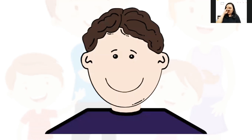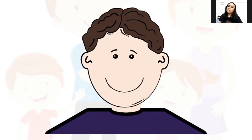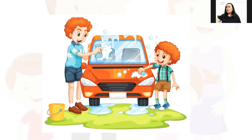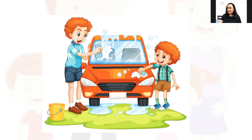Next we have brother. In Tagalog we call him 'kuya' — say 'kuya.' Kuya is the boy child in the family, especially if he is older than us. The most important work of kuya is to help tatay — whether washing the car, planting things in the garden, or carrying heavy boxes. If you're a kuya, remember that your job is to help tatay.